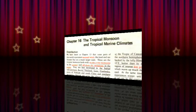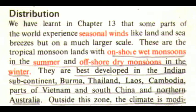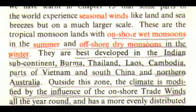Distribution. We have learnt in chapter 13 that some parts of the world experience seasonal winds like land and sea breezes, but on a much larger scale. These are the tropical monsoon lands with onshore wet monsoons in the summer and offshore dry monsoons in the winter. They are best developed in the Indian subcontinent, Burma, Thailand, Laos, Cambodia, parts of Vietnam and South China, and Northern Australia.